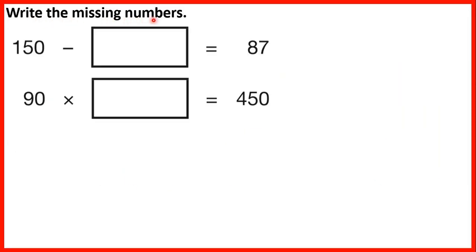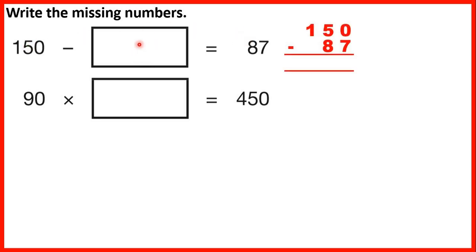Write the missing numbers. First, 150 minus something equals 87. Because the second number is missing, we still subtract to find it: 150 minus 87. We can't do 0 minus 7, so we go to the left — 1 less, 1 in front. 10 minus 7 is 3. We can't do 4 minus 8, but 14 minus 8 is 6. So our missing number is 63.